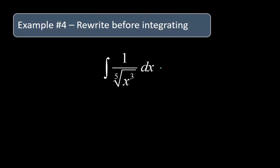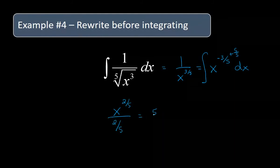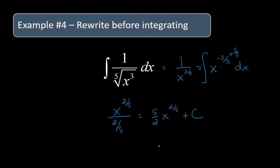Example number four is pretty much a combination of the two from the previous one. So we start off: this is going to be one over x to the three fifths, and we're going to bring that up, so it's x to the negative three fifths. We integrate in terms of x: add one to negative three fifths, giving us x to the positive two fifths divided by two fifths, which simplifies to five halves x to the two fifths, and then plus C. We combined two algebra rules: rewriting the radical notation and bringing it up making it negative, then applied our power rule.